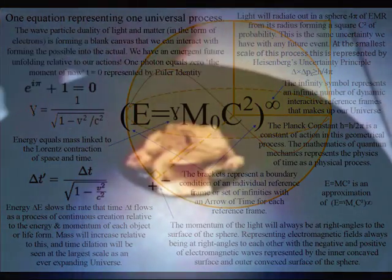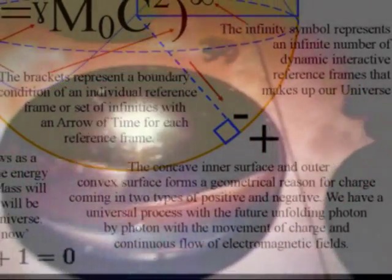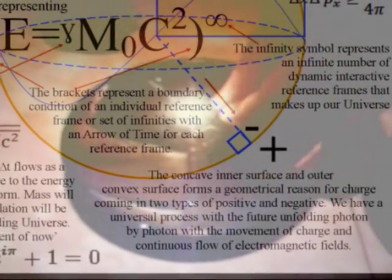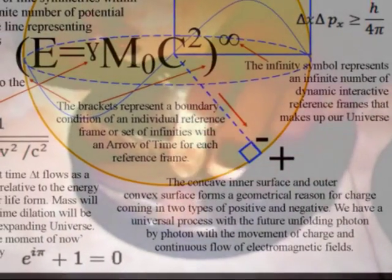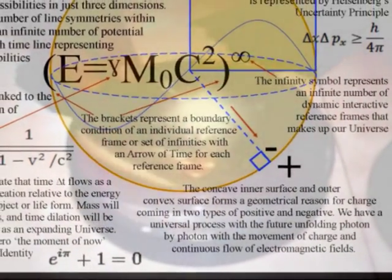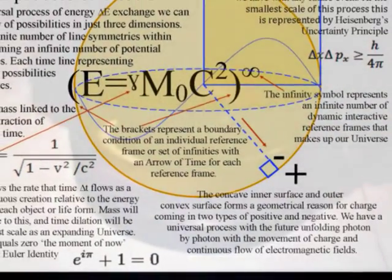In such a theory, the information for the three dimensions of our everyday life is encoded on the two-dimensional surface of the sphere in the form of positive and negative charge. The inner concave surface represents negative charge and the outer convex surface represents positive charge.